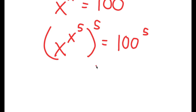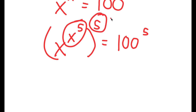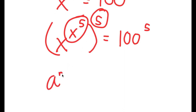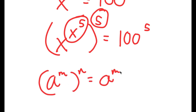So now, x to the power of 5 and 5 — these two are interchangeable. Meaning I can rewrite this. If I have something in the form a to the power of m to the power of n, this is equal to a to the power of m times n.